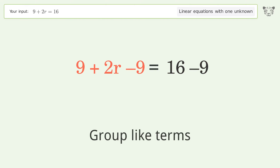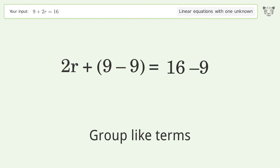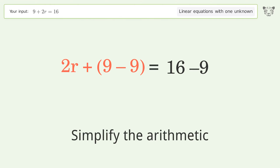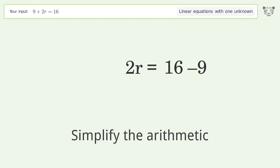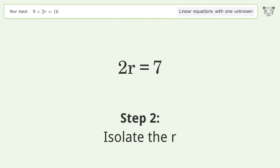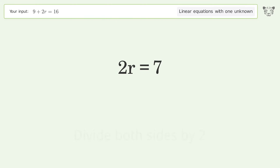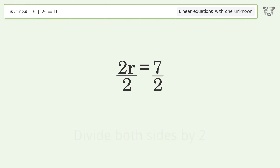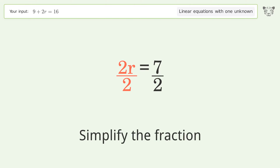Group like terms. Simplify the arithmetic. Isolate the r — divide both sides by 2. Simplify the fraction.